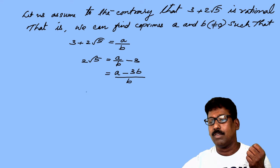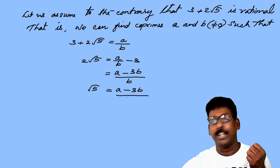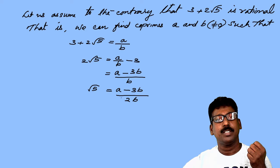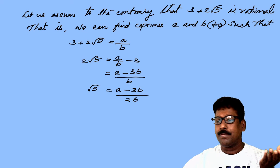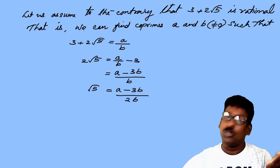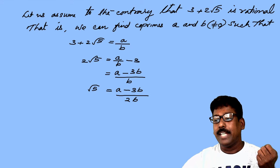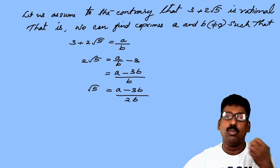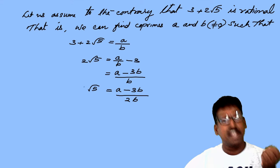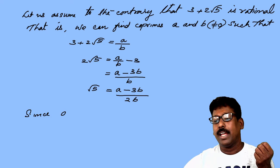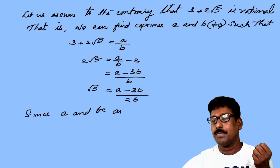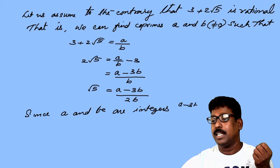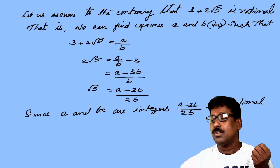Now transpose 2 to the other side. What will you get? Root 5 is equal to a minus 3b by b, divided by 2, which is 2b. Now, you know that a and b are co-primes or integers. What will be a minus 3b? A minus 3b will also be an integer, and 2b is also an integer. That means a minus 3b by 2b is in the form of p by q, so it will be a rational number.